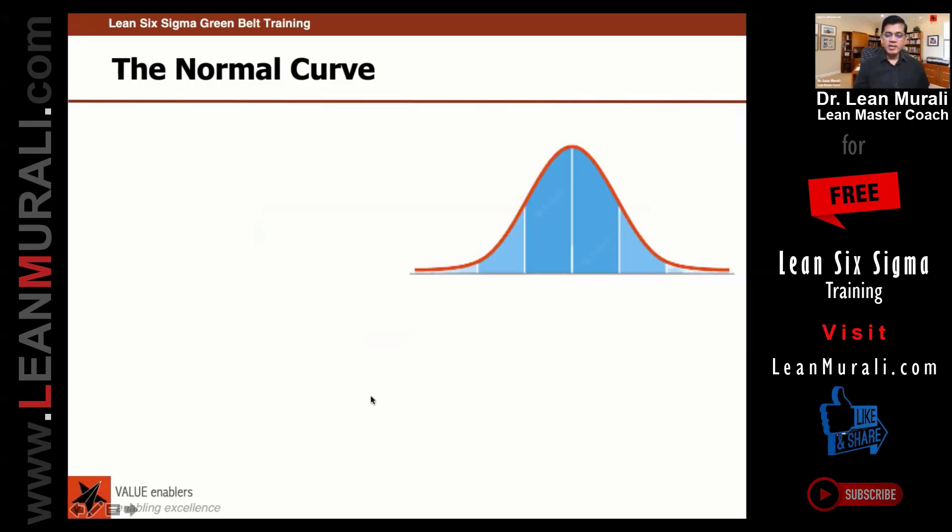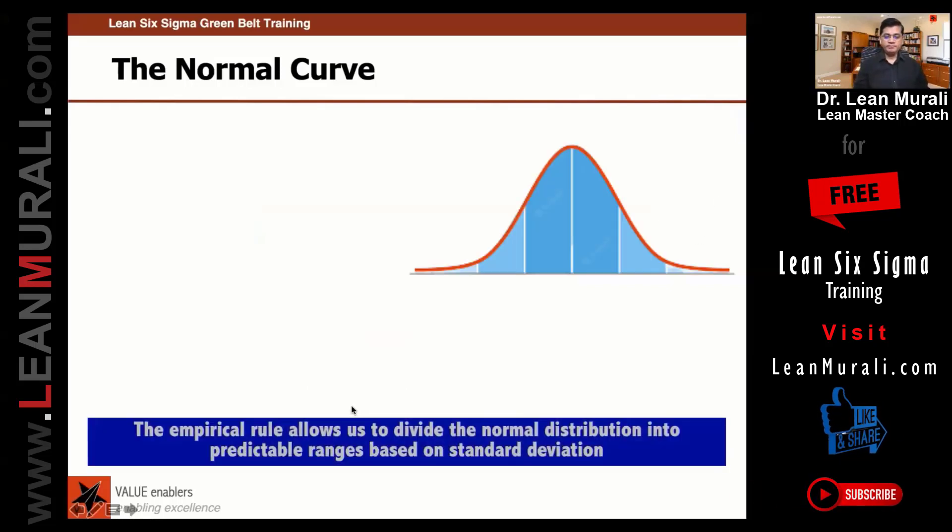Now we introduce what is called a normal curve. This is very important to understand. There is an empirical rule that allows us to divide the normal distribution into predictable ranges based on standard deviation. It allows us to divide the normal distribution into some predictable ranges. Let's see that.